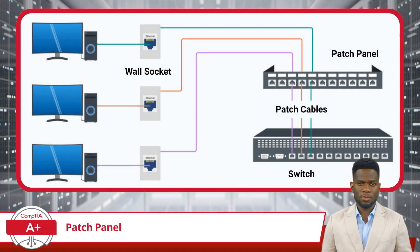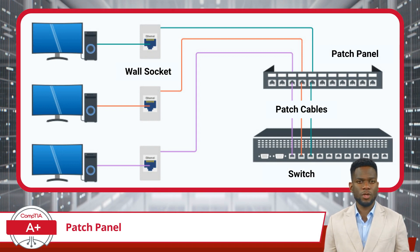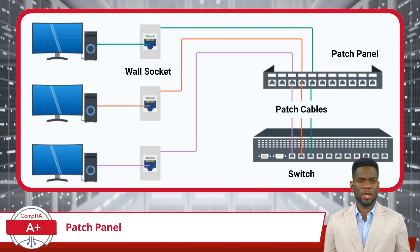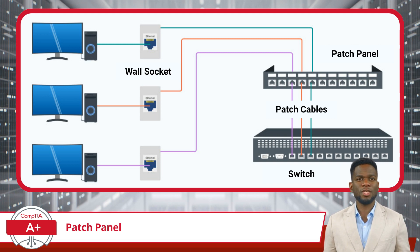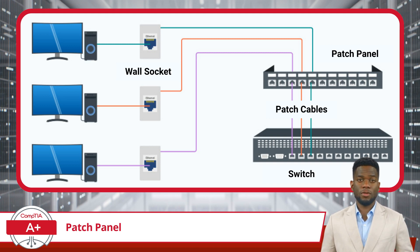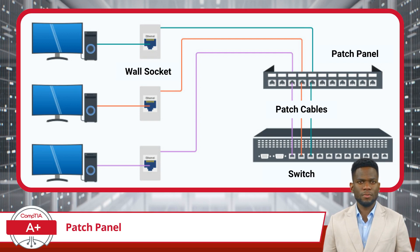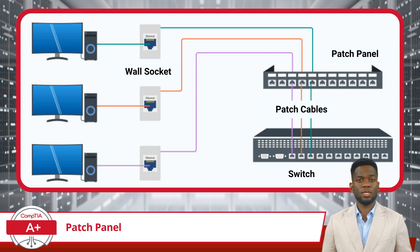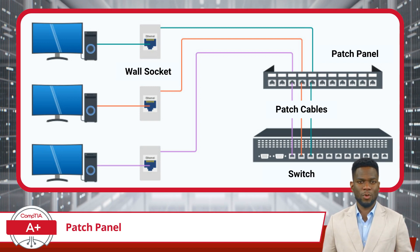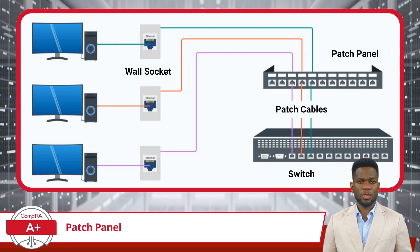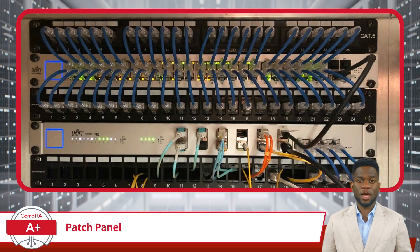How does a patch panel function? Think of it as a switchboard operator. When a network cable from a computer or another device is connected to the panel, it doesn't directly communicate with other devices. Instead, it connects to another port that leads to a network switch or router. This setup allows for easy management of cable connections. If a device needs to be moved or connected to a different network segment, it's simply a matter of changing the patch cable connections at the panel, rather than rerunning the entire cable.